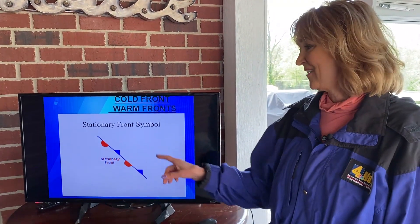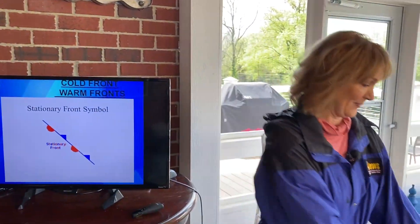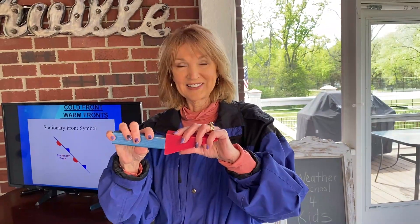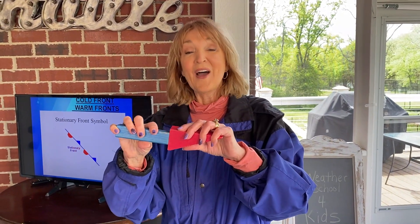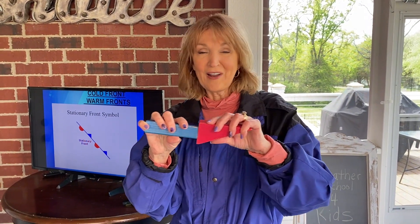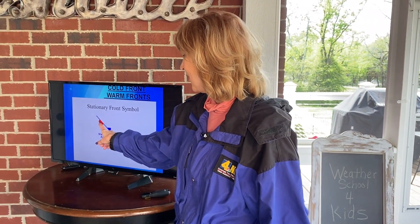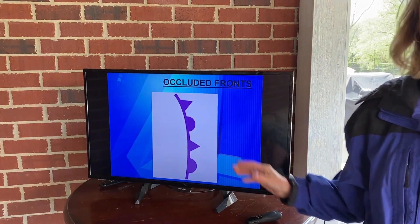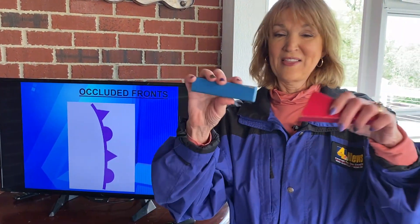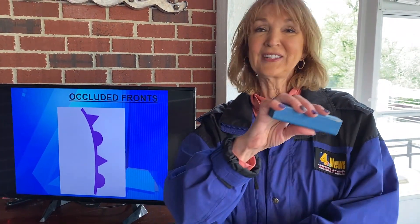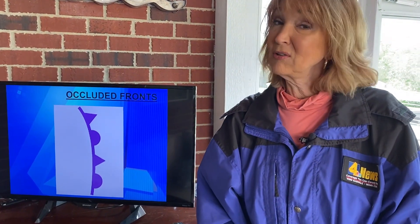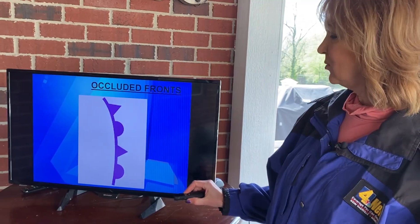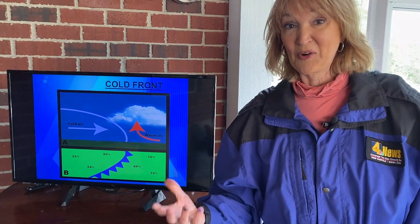A couple of other fronts we have. This is a stationary front. When we've got warm air and cold air coming together, one's pushing against the other. When it's a stationary front, neither of the fronts are moving — that's why we call it stationary. We use red, blue, red, blue to represent a stationary front. This is an occluded front, and this is when the cold air and the warm air are coming together and the cold air wins out altogether. That's a little more complicated, so let's stick with the basics today as we learn how to read our weather map.